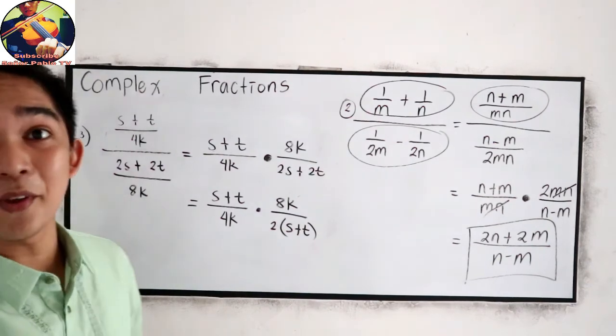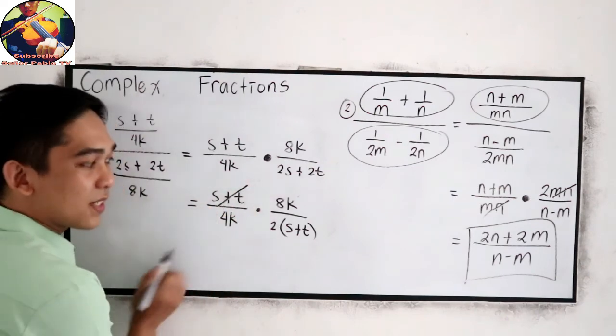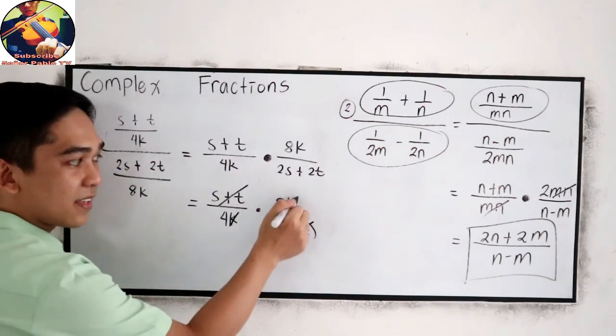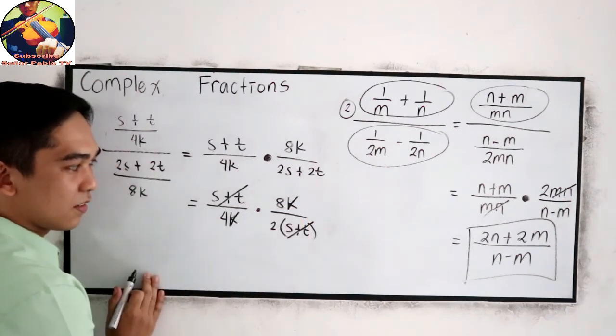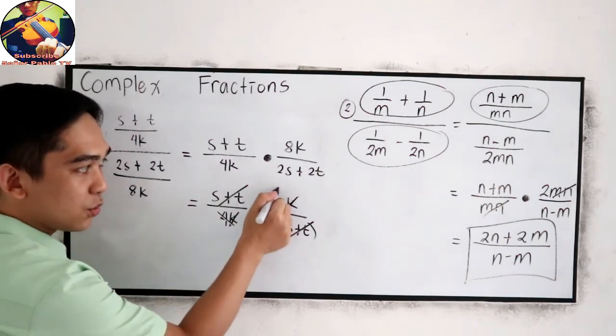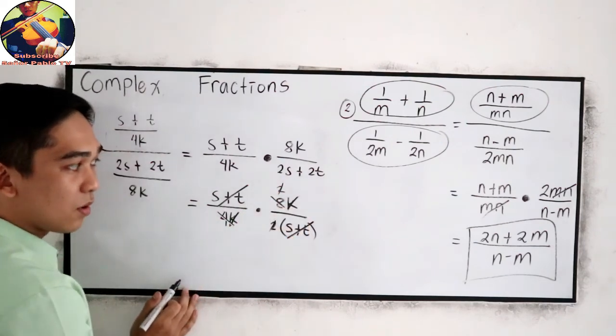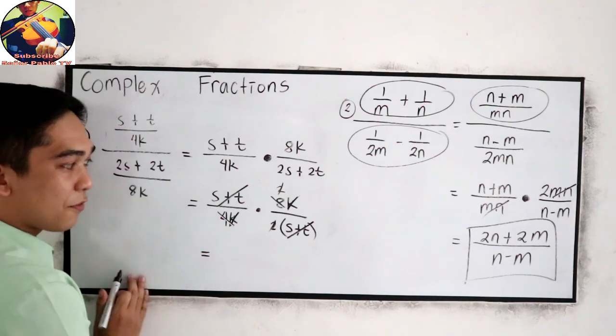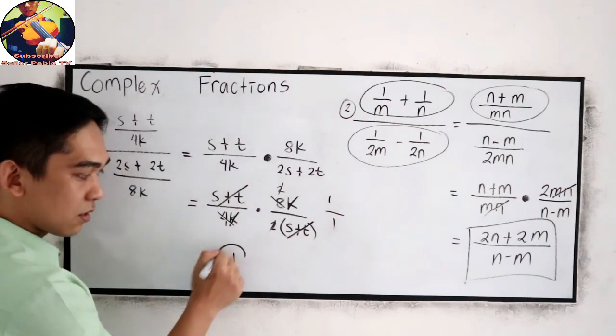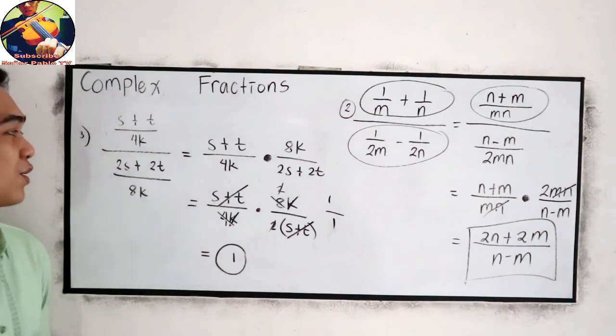Now we have S plus T. Let's check, 2 times S, 2S plus 2 times T, 2T. Now let's simplify. We can cancel S plus T and S plus T. Also, we can cancel K and K. We can cancel 8 divided by 4, so that will become 2, and 2 divided by 2 will become 1. So our final answer, it will become 1 over 1, and 1 over 1 is 1. So our answer in number 3 is 1.